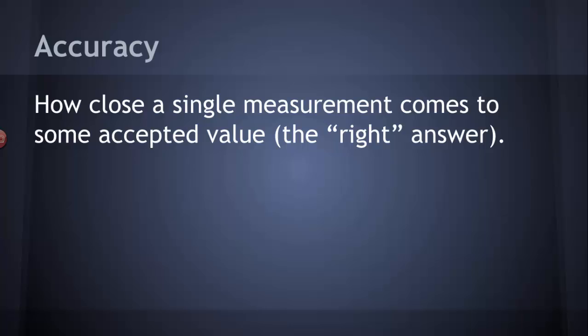To start with, accuracy. Definition of accuracy is how close a single measurement comes to some accepted value or the quote-unquote right answer.